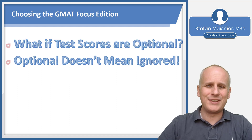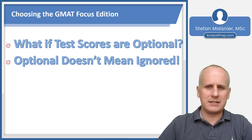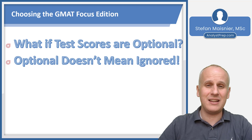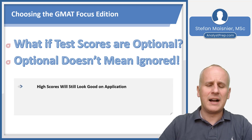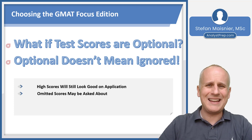But optional doesn't mean that scores are ignored. You'll only want to consider a test score completely unnecessary if your target program says they are test blind, meaning they won't even look at the scores. Because high scores will still look good on your application if you submit them, and you might get asked about why you didn't submit a score if you choose not to.